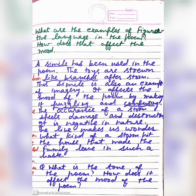What are the examples of figurative language in the poem, and how does that affect the mood? A simile has been used in the poem. Simile use ki gayi hai: 'The toys are strewn like branches after a storm.' This simile is also an example of imagery. It affects the mood of the poem by making it puzzling and confusing. The imagery of a storm spells damage and destruction — it is negative in nature.